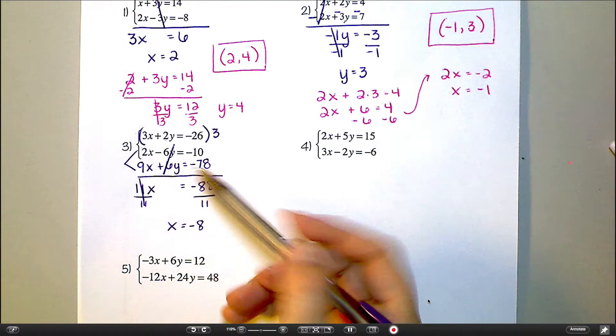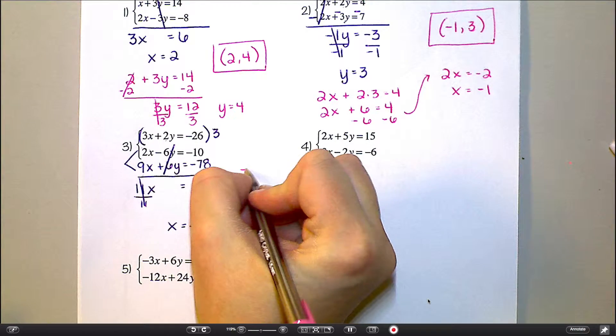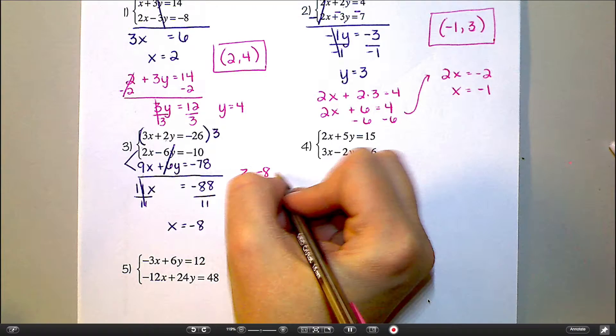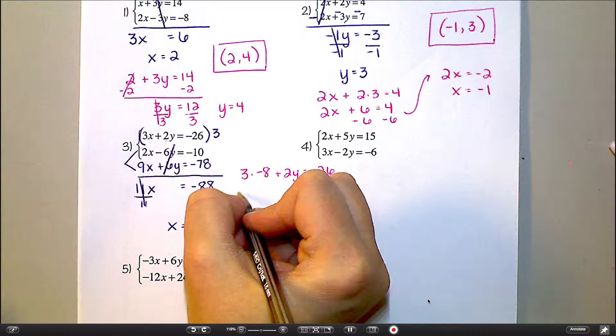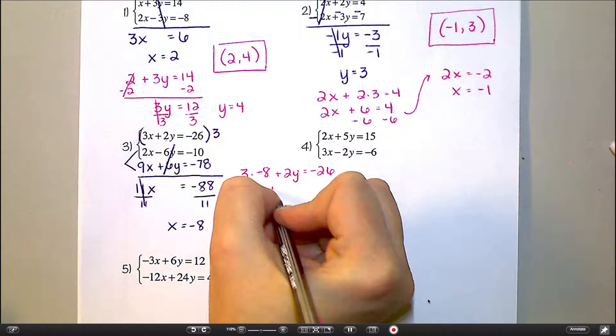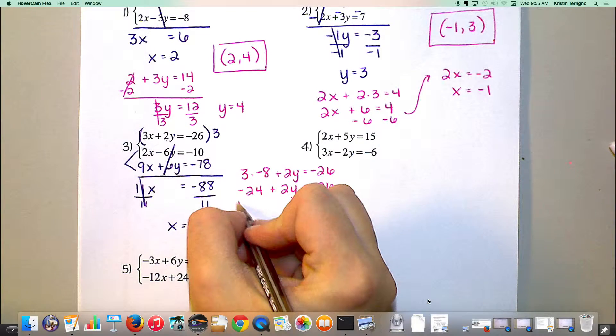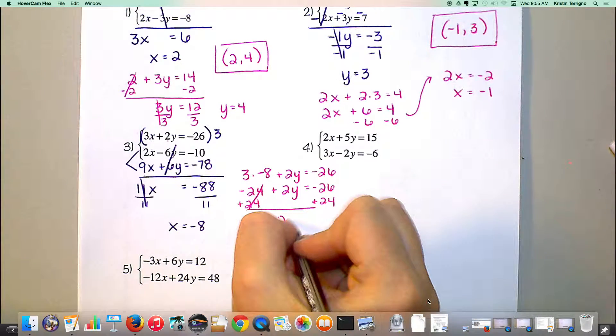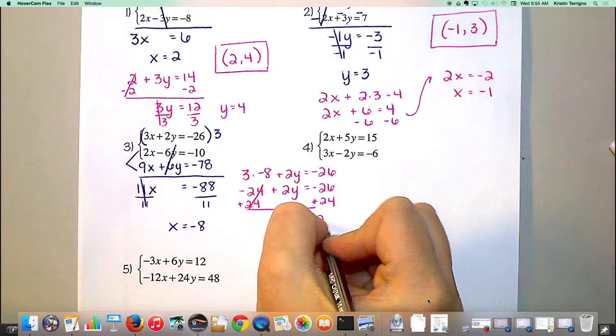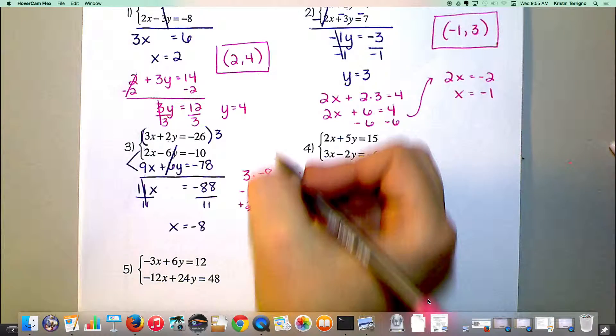And then I can plug that into the original two or this new one that I made. What do you feel like? The first one. Alright. So 3 times negative 8 plus 2y equals negative 26. That's negative 24 plus 2y equals negative 26. Add 24. So 2y equals negative 2 and y is going to equal negative 1. So final coordinate, negative 8, negative 1.